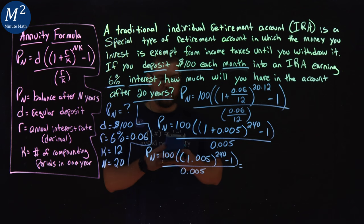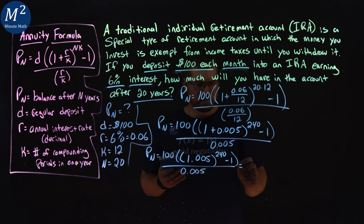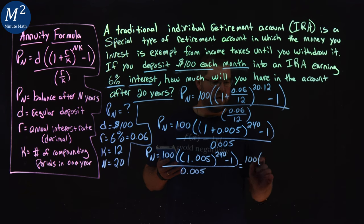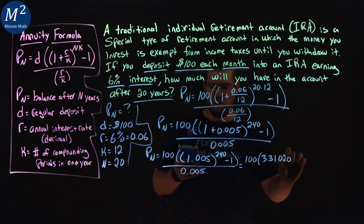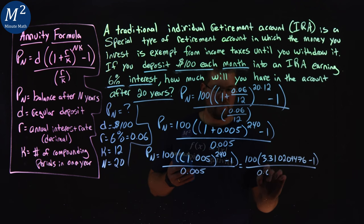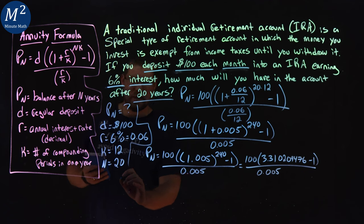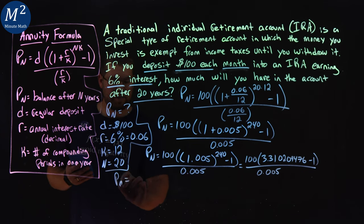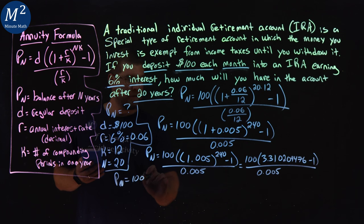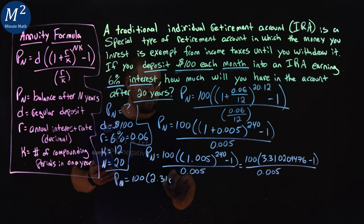Let's kind of move across here. 1.005 to the power of 240 is a large decimal of 3.31. So we have 100 times 3.310204476 minus, don't forget that 1, over 0.005. Showing all my steps here, we'll go P sub n again. We have 100 times, subtract 1 to that whole number is 2.310204476, over 0.005.